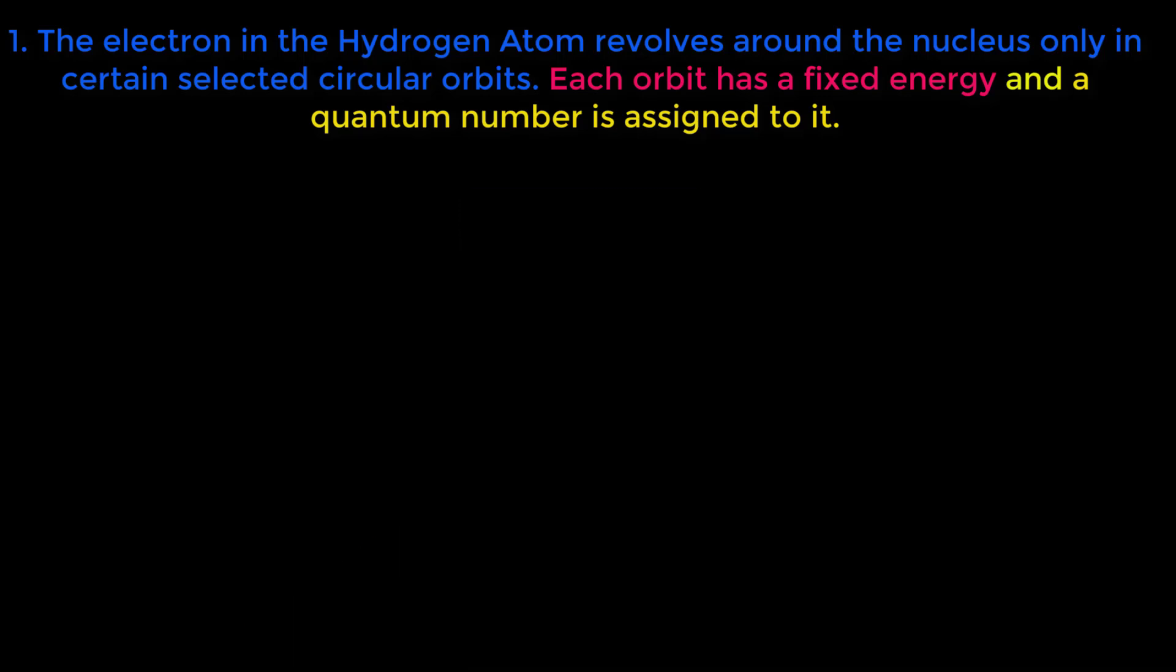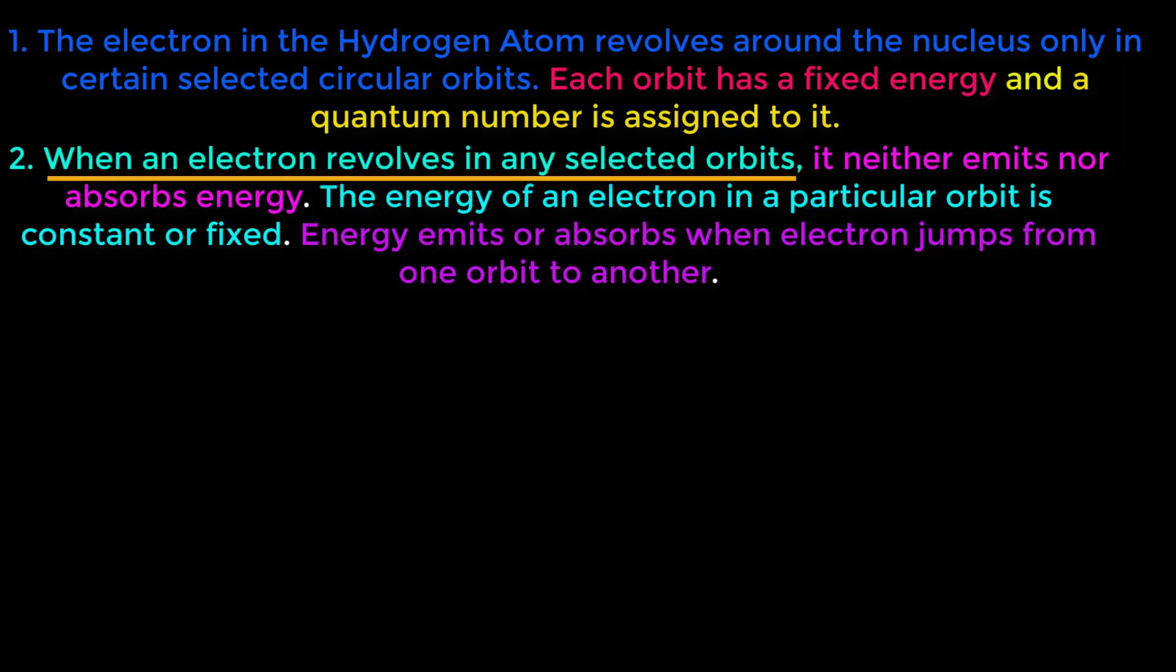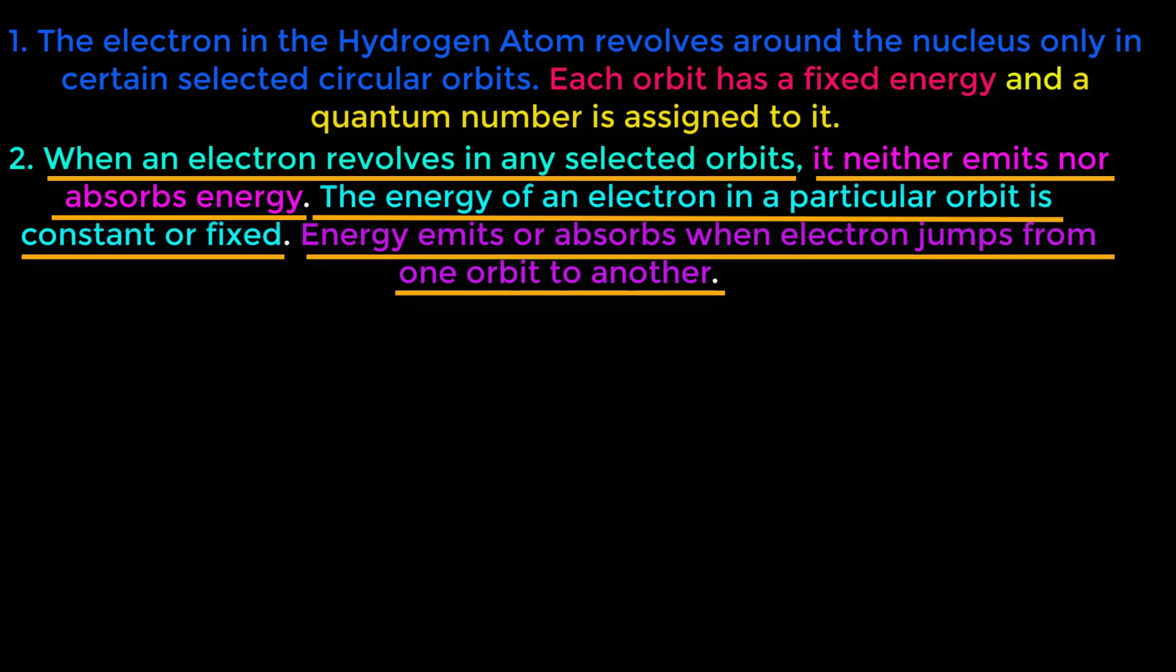The second postulate of Bohr's atomic model is: when an electron revolves in any selected orbits, it neither emits nor absorbs energy. The energy of an electron in a particular orbit is constant or fixed. Energy emits or absorbs when electron jumps from one orbit to another.